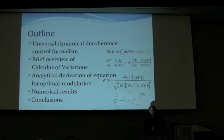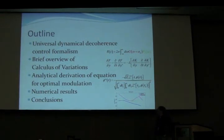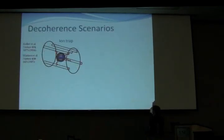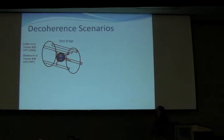Then I'll do a brief mathematical interlude introducing an overview of the calculus of variations, which I will use to derive an analytical equation for the optimal modulation in order to decrease the decoherence. Then I'll present some numerical results comparing the optimal modulation to the bang-bang or dynamical decoupling control, and end with conclusions.